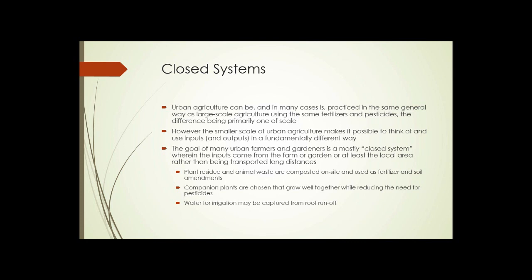The goal of many urban farmers and gardeners is a mostly closed system, wherein the inputs come from the farm or garden itself, or at least in the local area, rather than being transported long distance. Plant residue and animal waste are composted on-site and used as fertilizer and soil amendments. Companion plants are chosen that grow well together, reducing the need for pesticides. And water for irrigation may be captured from roof runoff.